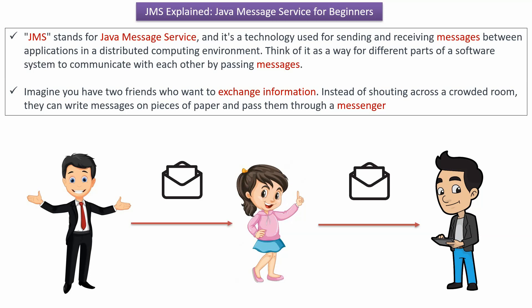In this video tutorial, I will explain JMS. JMS stands for Java Message Service and it is a technology used for sending and receiving messages between applications in a distributed computing environment. We can think of it as a way for different parts of a software system to communicate with each other by passing messages.